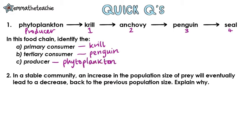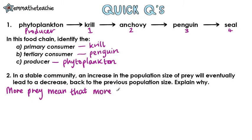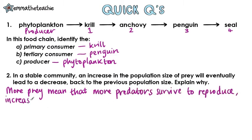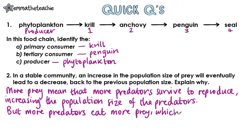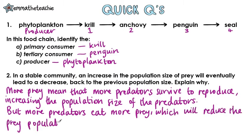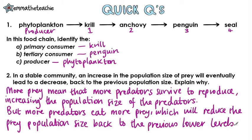Question 2: In a stable community, an increase in the population size of the prey will eventually lead to a decrease back to the previous population size. Explain why. Well, more prey mean that more predators survive to reproduce, increasing the population size of the predators. But more predators will eat more prey, which will reduce the prey population size back down to the previous lower levels. Notice that the question says 'population size', so that's the language to use in your answer, instead of saying 'numbers'.